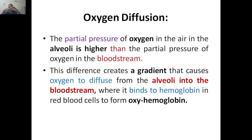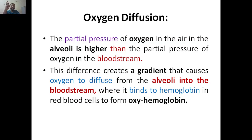Once oxygen enters the bloodstream, it binds with hemoglobin. In blood, the components are RBC (red blood cells), WBC (white blood cells), and platelets. RBC is specifically designed to deliver oxygen to all parts of our body. The oxygen-carrying protein present in the RBC is hemoglobin.